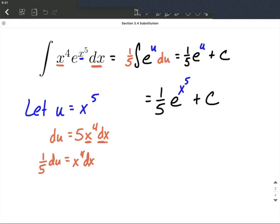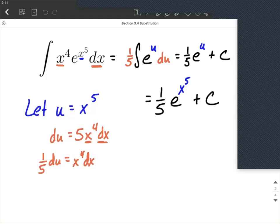There's our antiderivative. Now you could always double-check by taking the derivative of what we just found. It should end up being x to the fourth e to the x to the fifth power. So good luck as you're working on these. It takes practice, but you'll get there.